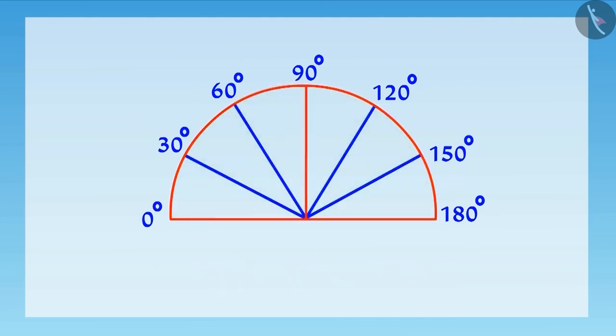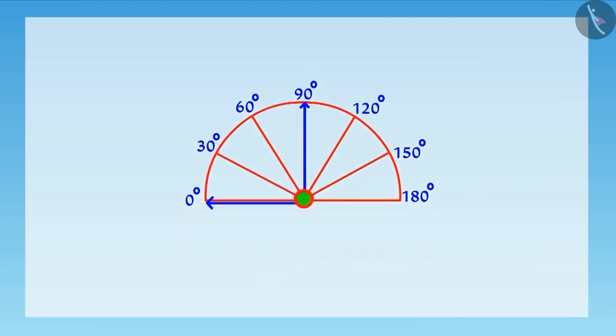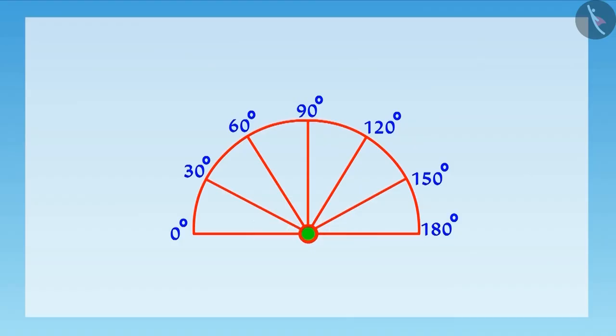Here, our protractor is ready. Now, if we have to measure an angle, we will place the center point of this protractor at the vertex of the angle. And remember, one line of angle must be placed along the baseline of the protractor. Now, this second line of the angle tells us the correct measurement of the angle.